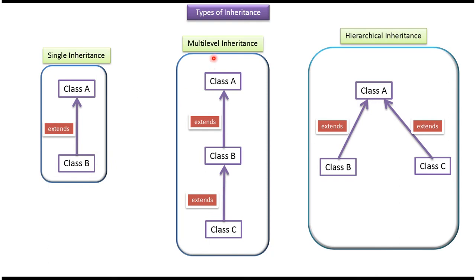The second one is Multi-Level Inheritance, and it involves more than two classes. Here you can see the example: Class A extends Class B, and Class B extends Class A.